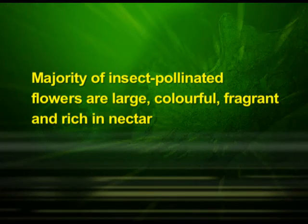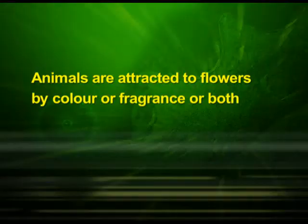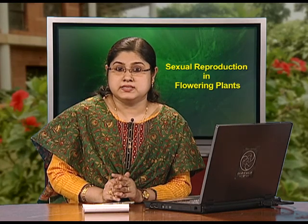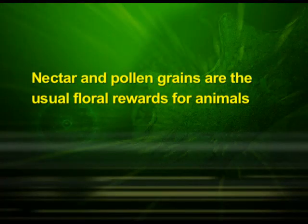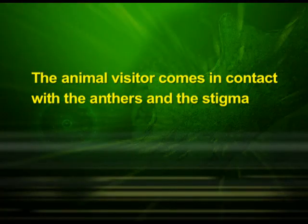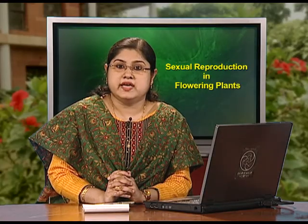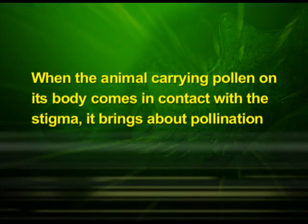Majority of insect-pollinated flowers are large, colorful, fragrant, and rich in nectar. When the flowers are small, a number of flowers are clustered into an inflorescence to make them conspicuous. Animals are attracted to flowers by color or fragrance or both. The flowers pollinated by flies and beetles secrete foul odors to attract these animals. To sustain animal visits, the flowers have to provide rewards. Nectar and pollen grains are the useful floral rewards. For harvesting the rewards from the flower, the animal visitor comes in contact with the anthers and the stigma. The body of the animal gets a coating of pollen grains, which are generally sticky in animal-pollinated flowers. When the animal carrying pollen on its body comes in contact with the stigma, it brings about pollination.